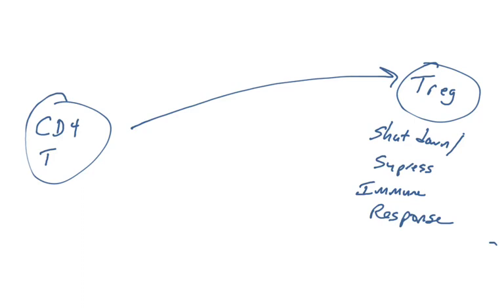The last type of CD4 positive T cell we'll talk about are regulatory T cells, or Treg cells. Their effector function is to suppress the immune response, or shut down the immune response. That's interesting because all the other T cells activate the immune response. These are self-peptide binding T cells. If you recall back in the chapter we talked about T cell development, we talked about not wanting T cells to recognize self-peptides. But these are a class of T cells that do recognize self-peptides, and they suppress the immune response.